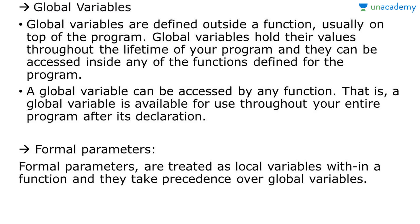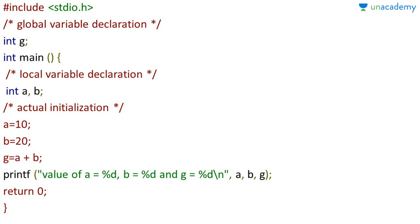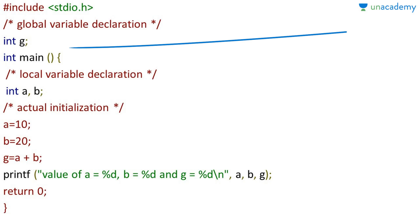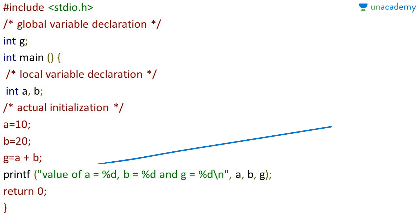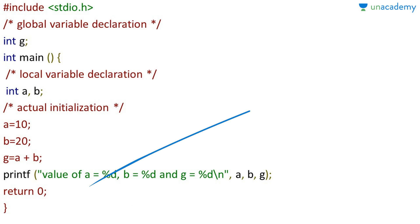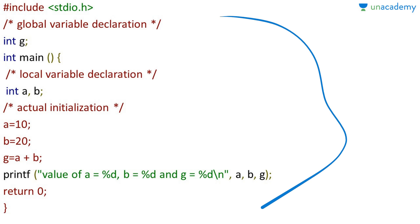Formal parameters are basically treated as local variables within a function. They are the parameters used in the function body when you define a function. Looking at an example: the global variable is declared outside the function, and in the main function there is a local variable declaration. We initialize values of a, b, and g, perform addition, and print. The value of a would be 10, b would be 20, and g would be 30 (20 plus 10).